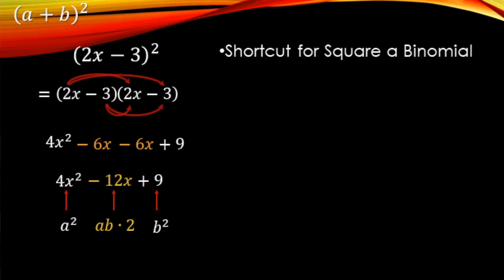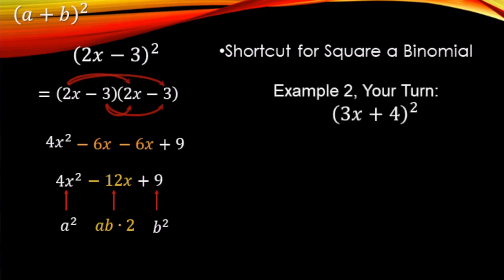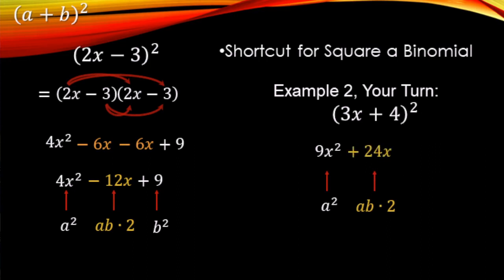Now that you've seen the pattern once, go ahead and try this one out on your own. Pause the video, come back, see how you did. So our firsts: 3x times 3x gives 9x squared. Now the middle term — that's the tricky one most people forget. We go 3 times 4 and then double it: 3 times 4 is 12, doubled makes 24, so 24x. And then for the last term, 4 times 4 — or 4 squared — makes 16.